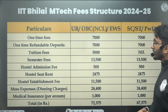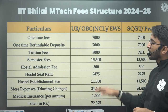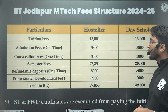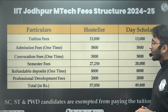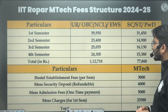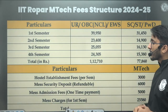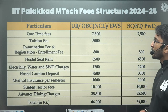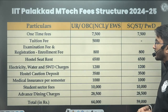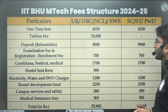IIT Bhilai has fees of around ₹72,000 — as it is a new IIT, the fees is a little bit higher, including all charges. IIT Jodhpur total fees is around ₹57,000, and for day scholars it is around ₹49,800. For IIT Ropar, semester-wise fees are available for both categories and hostel charges are also included. IIT Palakkad is also a new IIT, with a total amount of ₹64,000 including hostel and other charges, and ₹59,000 for SC, ST, and PWD.